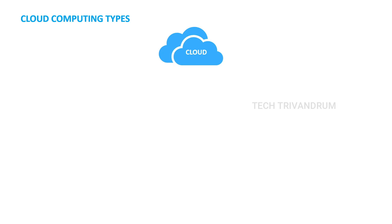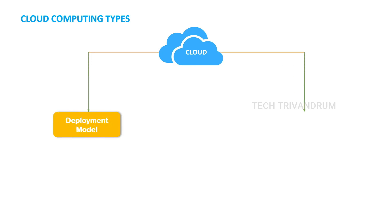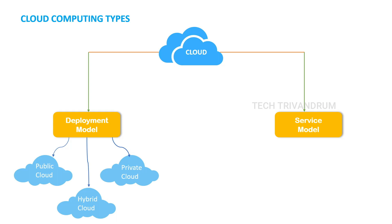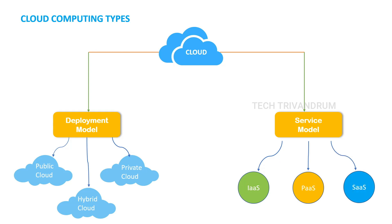Cloud is mainly classified into two different types: one based on the deployment model and the second based on the service model. In the deployment model, it is again classified into three types: the public cloud, the hybrid cloud, and the private cloud. And the service model is classified into IaaS, PaaS, and SaaS. Next we can see the different types of deployment models.